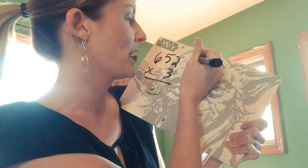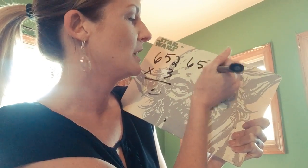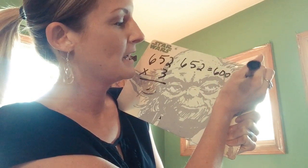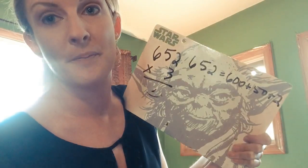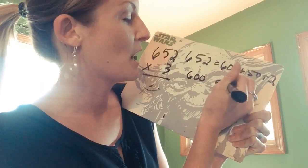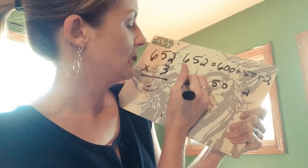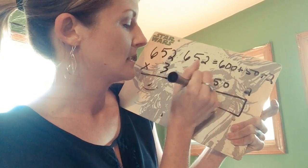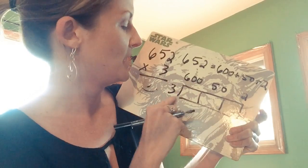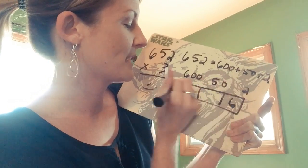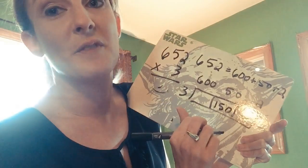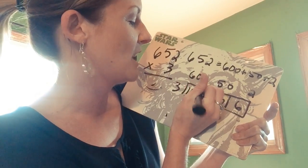We know that we can break 652 down into 600 plus 50 plus 2. So we're going to go ahead and put those numbers above boxes. Then we bring the 3 over: 3 times 2 is 6, 3 times 50 is 150, and 3 times 600 gives us 1800.